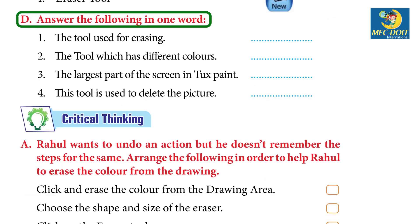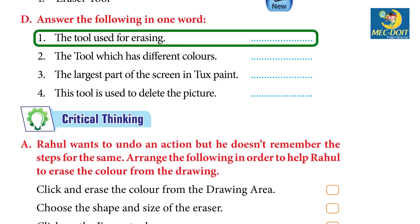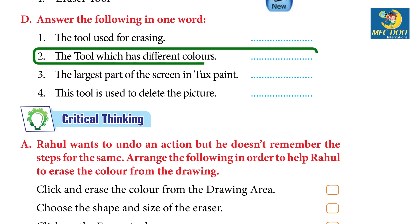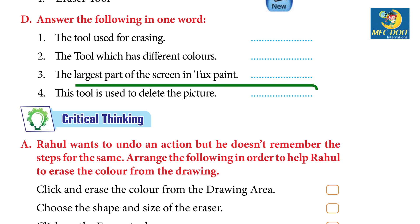D. Answer the following in one word: 1. The tool used for erasing — Eraser tool. 2. The tool which has different colors — Color palette. 3. The largest part of the screen in Tux Paint — Drawing area.